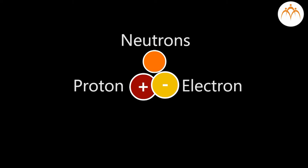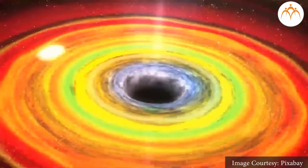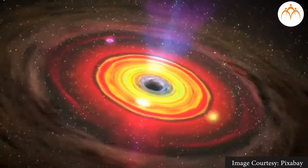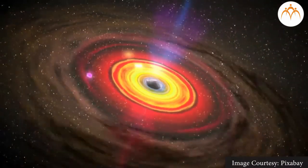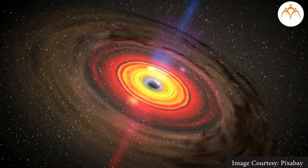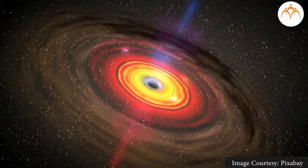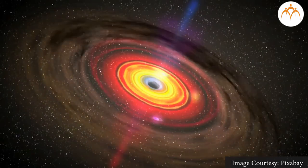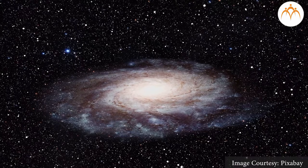If the collapsing core is three times heavier than our sun, it produces a neutron star — this happens as protons and electrons in the core combine to form neutrons. If the core is heavier than three solar masses, then it collapses completely to form a black hole with tremendous gravity.